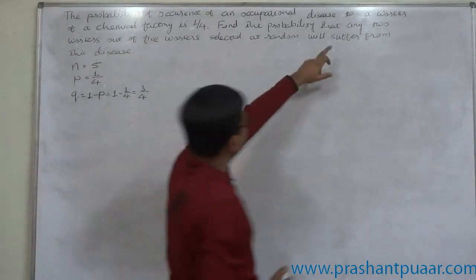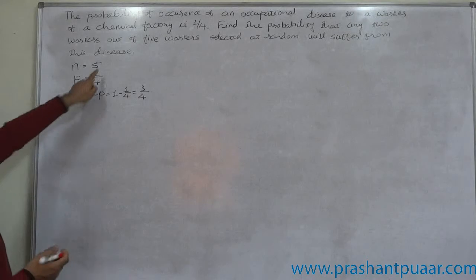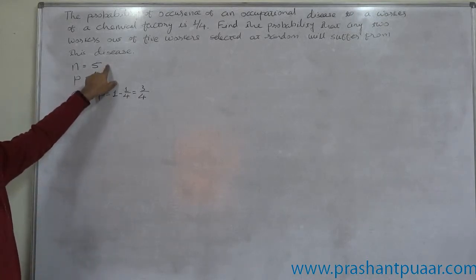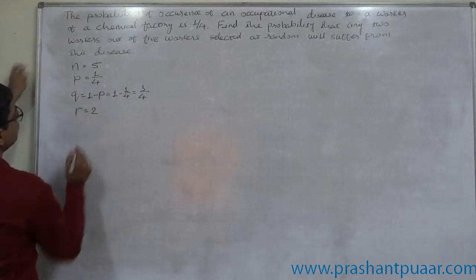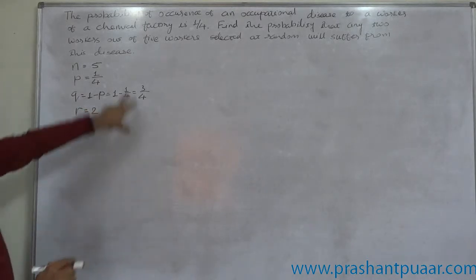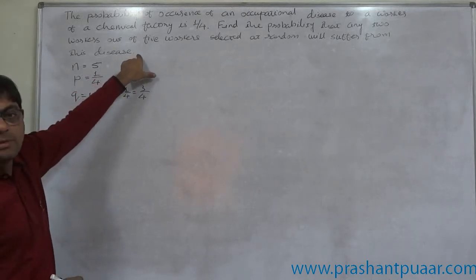Find the probability that any 2 workers out of 5 selected. That means out of these 5 trials, any 2, that means R comes to 2. Now see the summary of the data. We can say that the experiment follows binomial law.